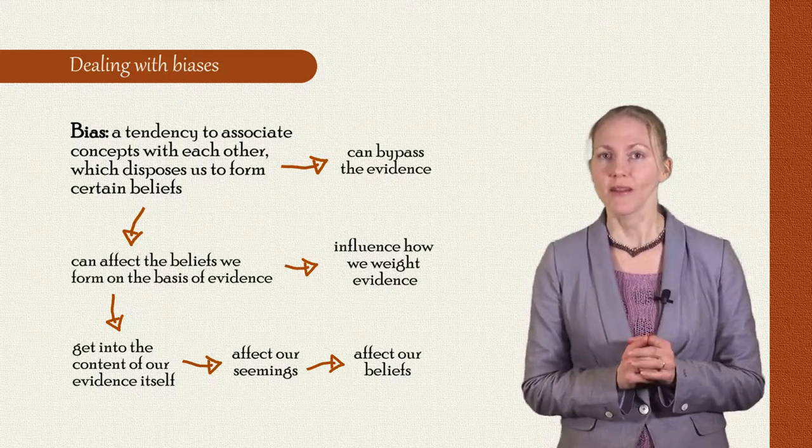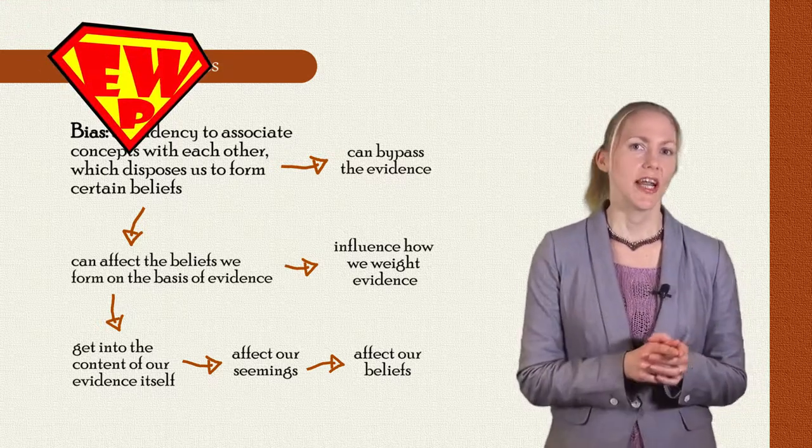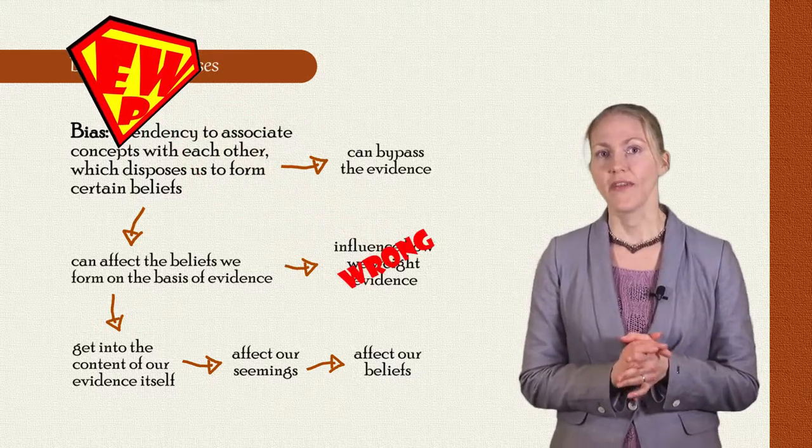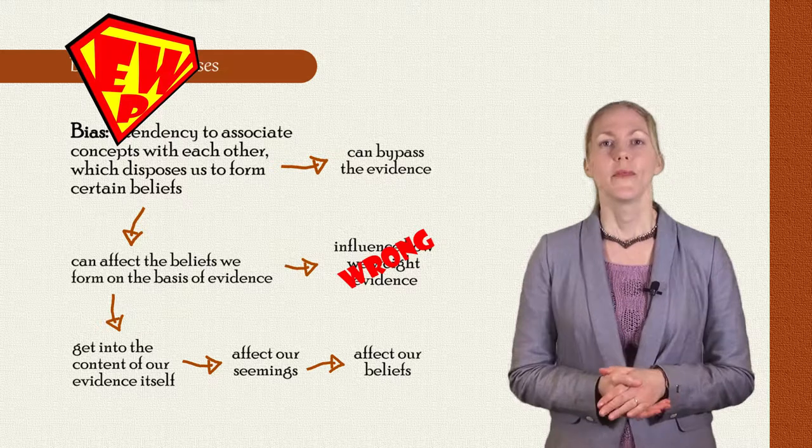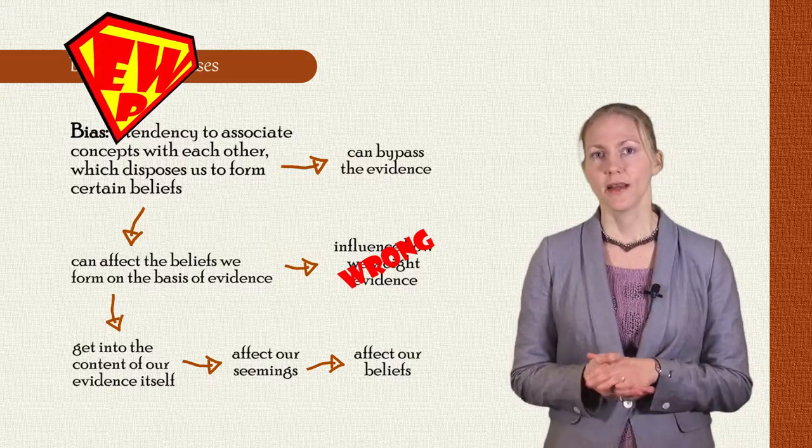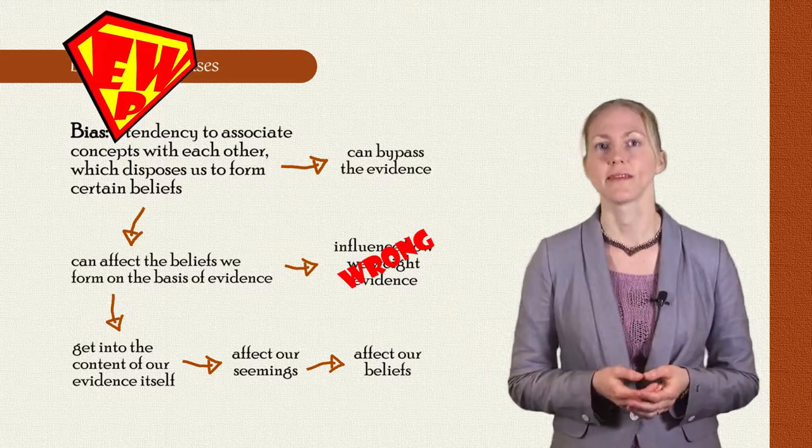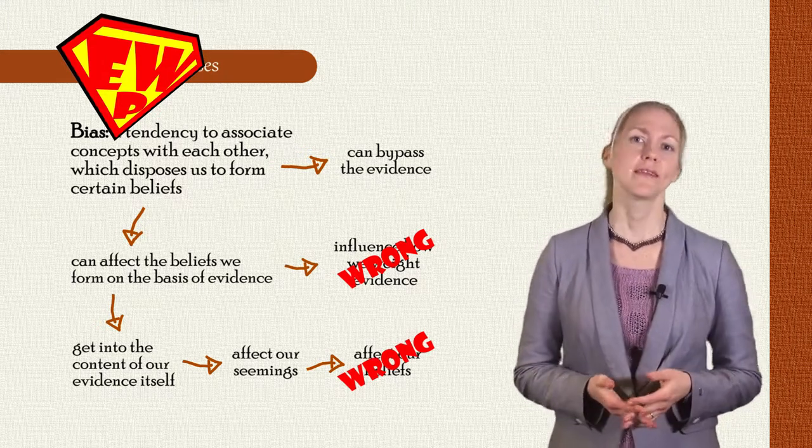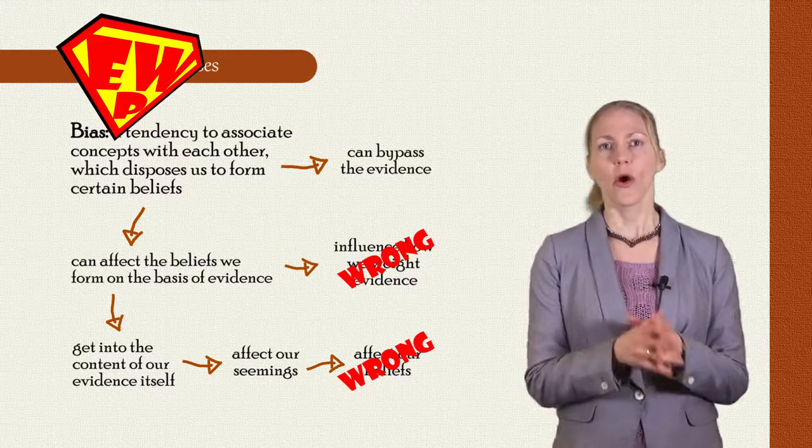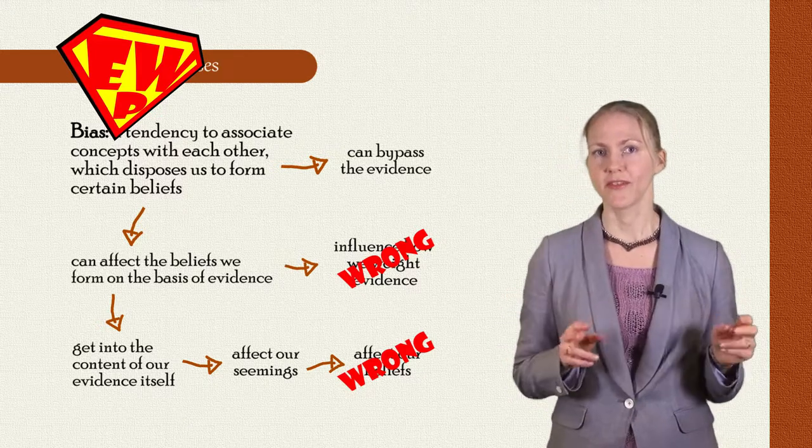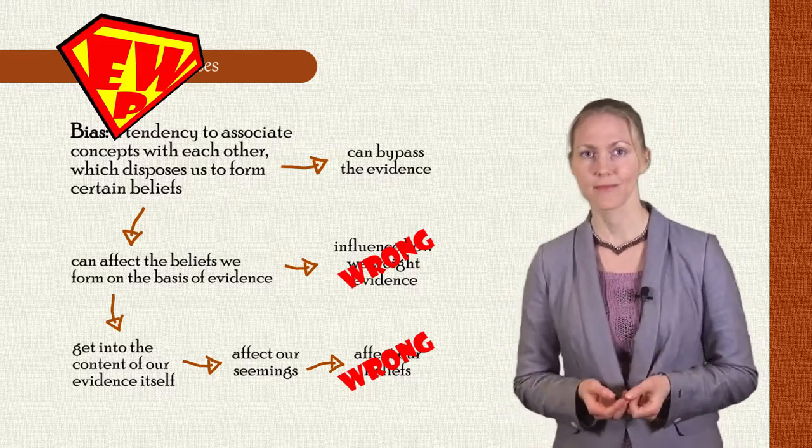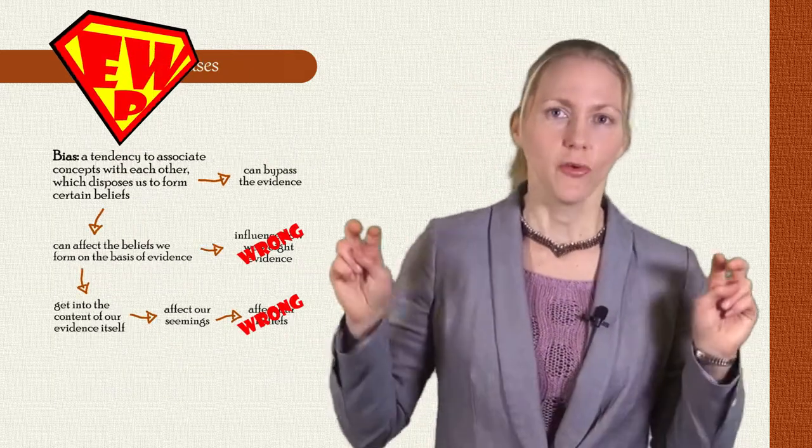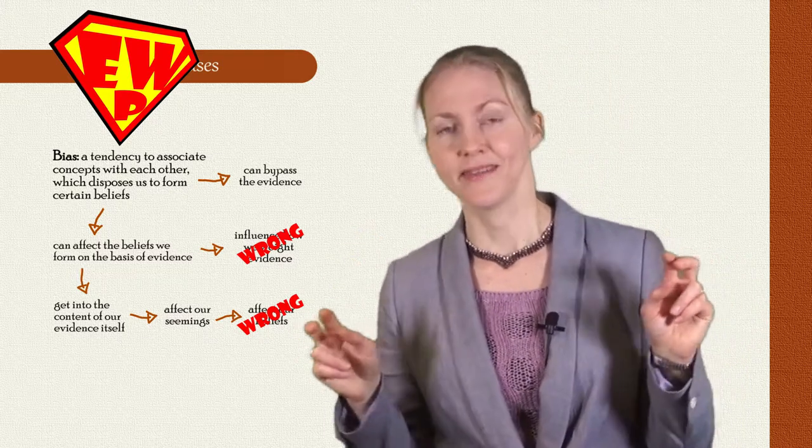This is where an evidence-weighting policy comes in. It can't change my natural tendency to weight evidence, but it can tell me that that tendency is wrong. Similarly, an evidence-weighting policy cannot take the biases out of my seemings, but it can affect how I form beliefs on the basis of those seemings. It can say, for example, that you shouldn't always automatically form the beliefs that your seemings suggest. But an evidence-weighting policy has to be careful here, for it can't just say don't form beliefs on the basis of biased seemings.